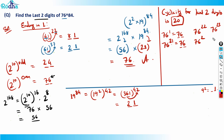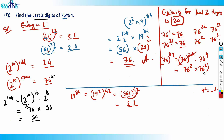Applying cyclicity to 76 raised to 84: we can write 84 as 80 plus 4, where 80 is a multiple of 20. So 76 raised to 84 is the same as 76 raised to 4. Now 76 raised to 4 is 76 squared into 76 squared, and since 76 into 76 always ends in 76, the answer is 76. That's the cyclicity approach.